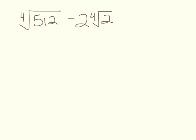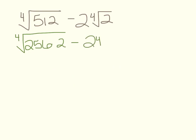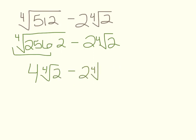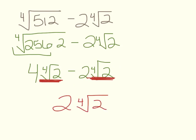The hardest one: the fourth root of 512 minus 2 times the fourth root of 2. At first glance these don't look like like radicals, but the fourth root of 512 can be broken down. What perfect fourth power goes into 512? That's 256, since 256 times 2 equals 512. The fourth root of 256 is 4, so we get 4 times the fourth root of 2, minus 2 times the fourth root of 2. Now they're like radicals: 4 minus 2 gives 2 fourth roots of 2.